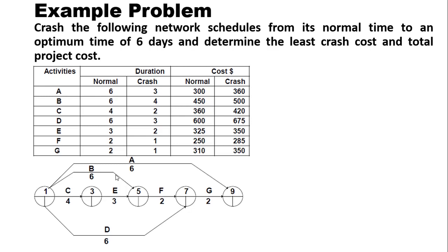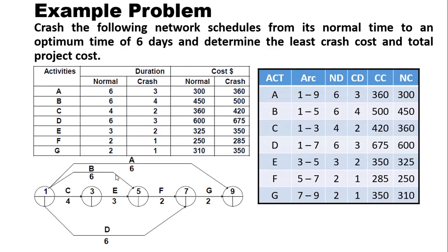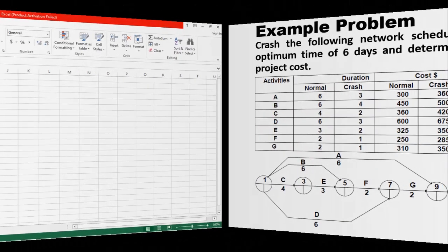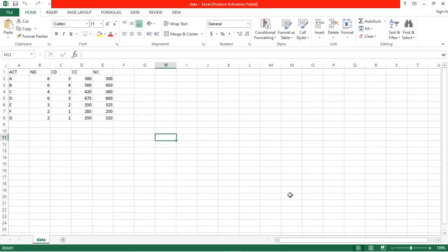We are going to summarize this information into a table with activities A, B, C, D up to G, showing the arcs for each activity as in the network diagram. We have normal duration (ND), crash duration (CD), crash cost (CC), and normal costs (NC). We take this table, summarize the information from the problem into an Excel sheet, and save it in CSV format. We are then going to load this data into our Python files.